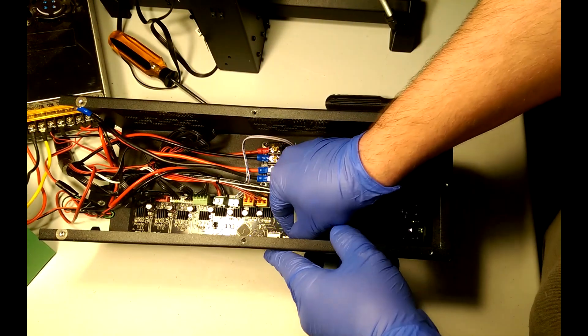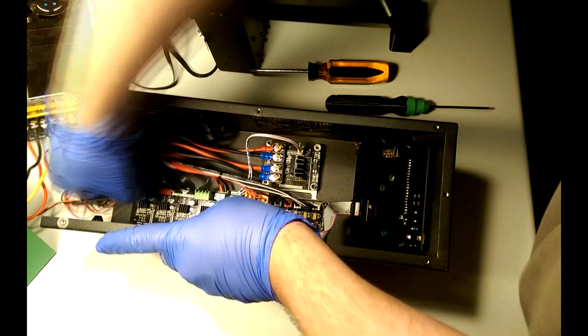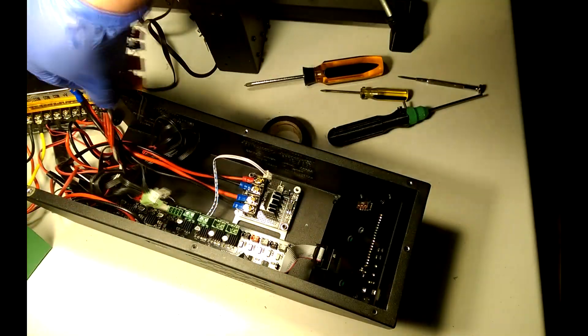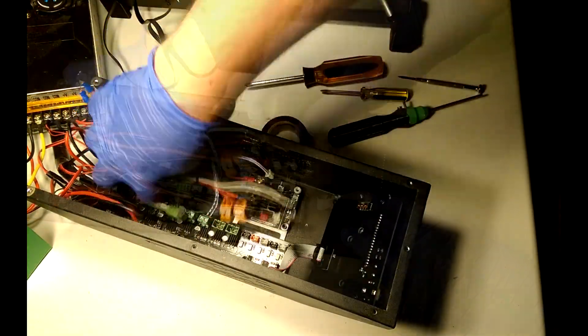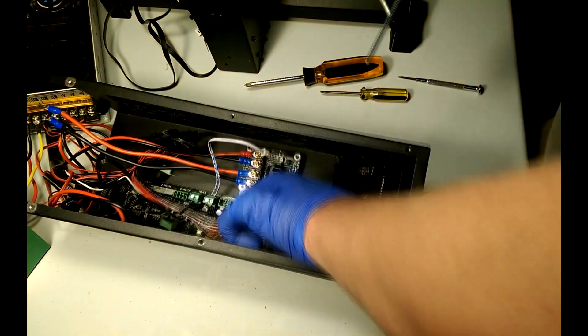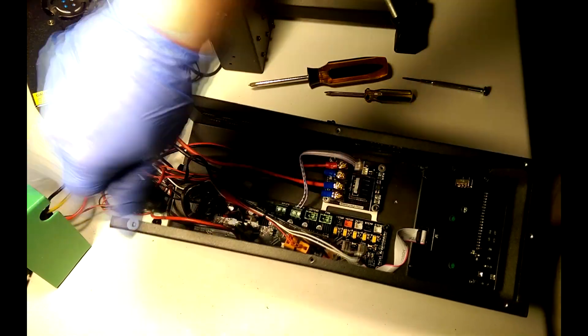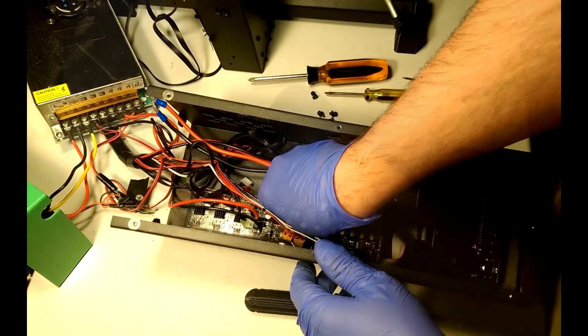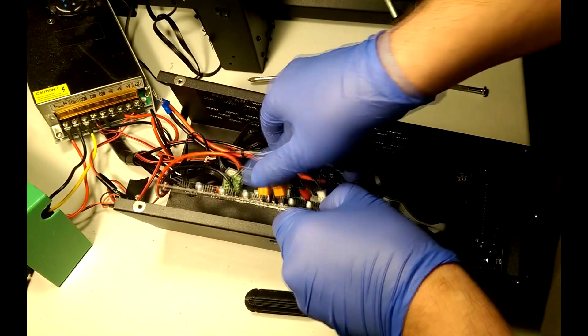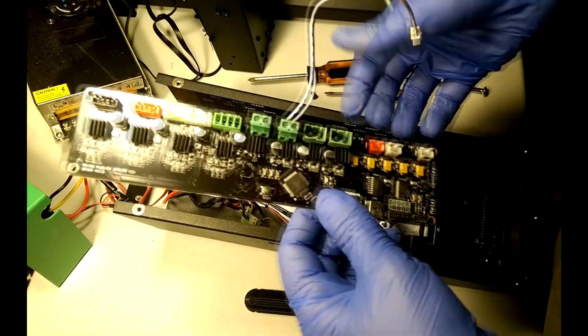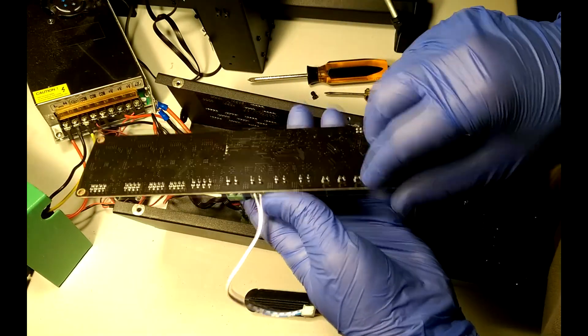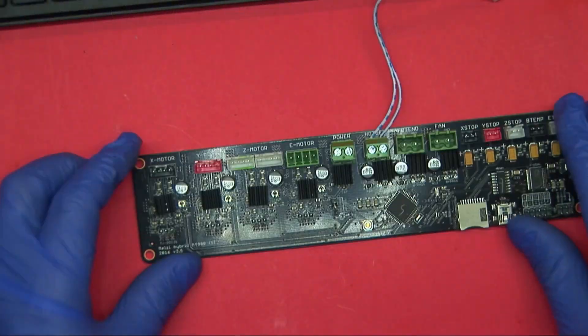So now just carefully remove each of the plugs from the connectors and unscrew the Melzi board from the chassis. Okay, so now that we've got this on the bench.